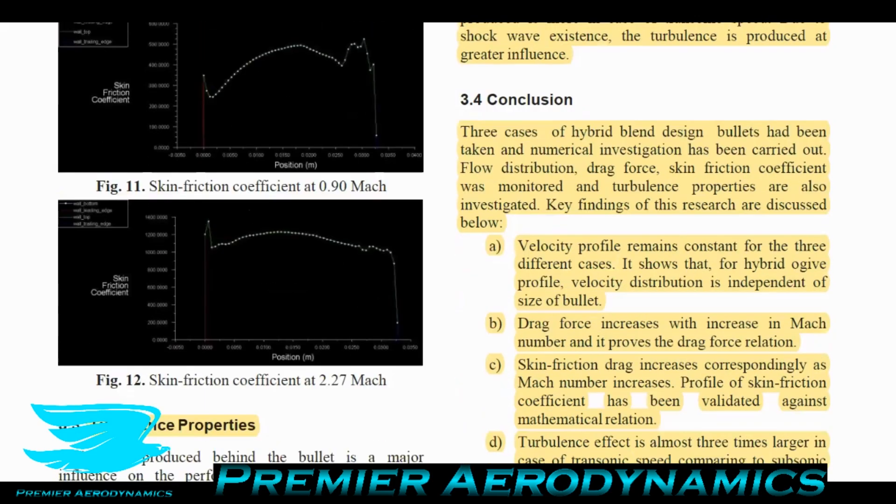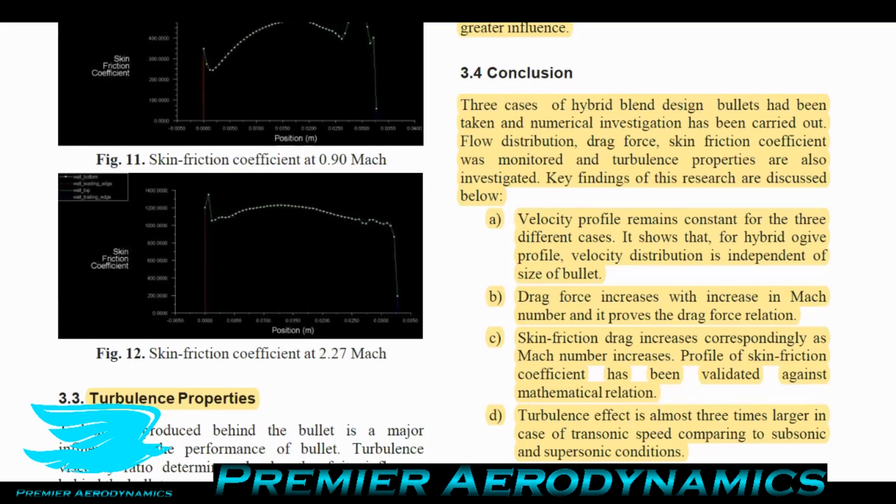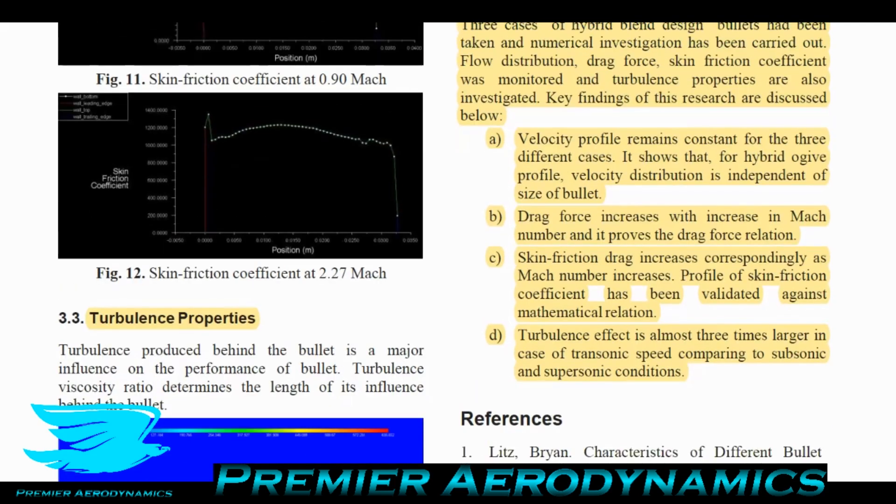In conclusion, three cases of hybrid blend design bullets were taken and numerical investigations carried out. Flow distribution, drag, skin friction coefficient were monitored and turbulence properties investigated. Key findings: the velocity profile remains constant for the three cases. For hybrid ogive profiles blending tangent and secant radius curvatures, velocity distribution is dependent on bullet size. The velocity coefficient is more independent of bullet size.